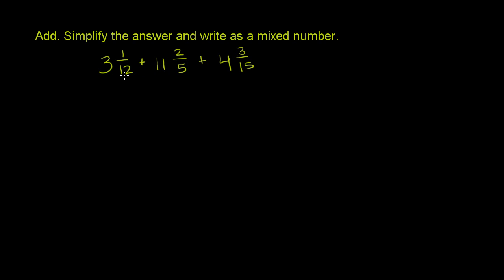We have three mixed numbers here: 3 and 1/12 plus 11 and 2/5 plus 4 and 3/15. We've already seen that we could view this as 3 plus 1/12 plus 11 plus 2/5. This is the same thing as 3 plus 1/12 plus 11 plus 2/5 plus 4 plus 3/15.